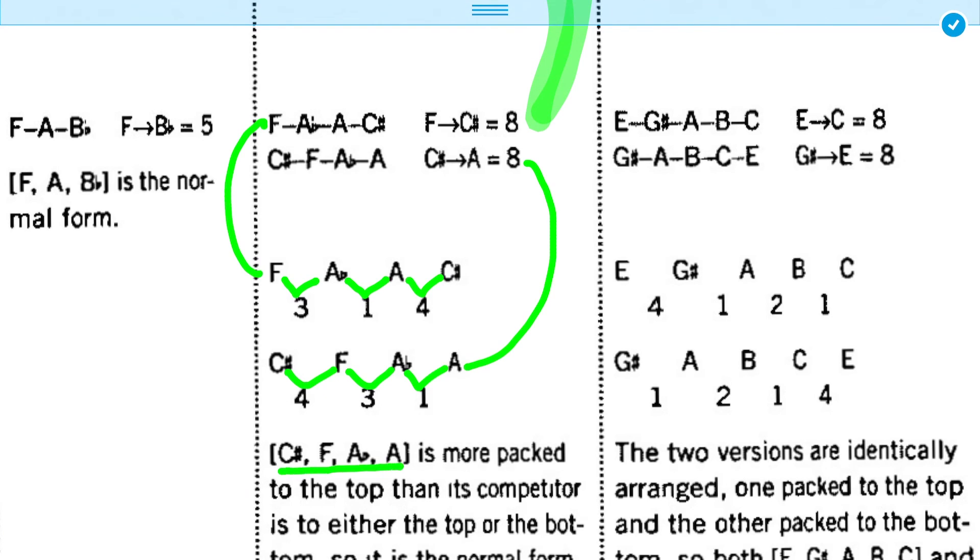C sharp, F, A flat, A is the more packed to the top than its competitor is to either top or bottom. So, this is the normal form. What that means is that smallest interval, one, in the one with a star, is at the top of the set. It's at the right side of the set, whereas in the set without a star, it's in the middle. So, the set, C sharp, F, A flat, A is more closely packed to the top, and so in our arbitrary ruling, that's the real normal form.